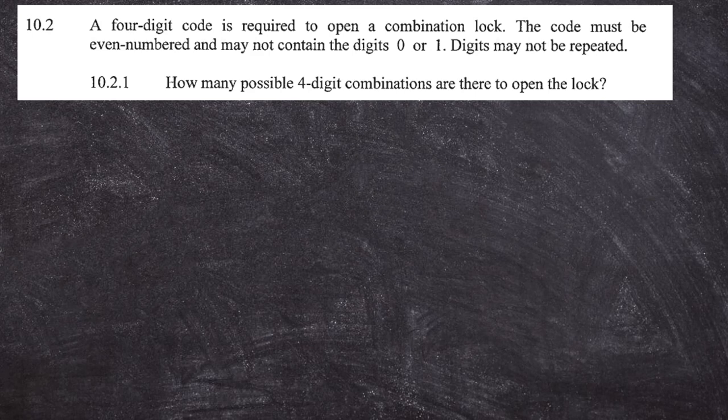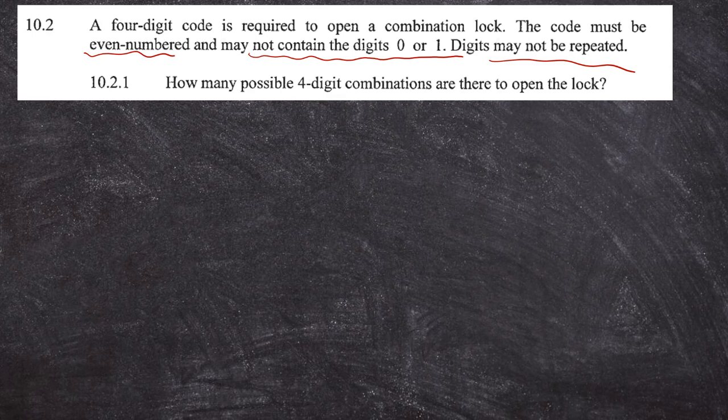We're going to start with 10.2.1. In question 10.2, a four-digit code is required to open a combination lock. The code must be even-numbered — very important restriction — and may not contain zero or one. The digits may not be repeated. So you are given three restrictions. The first question asks you to calculate the total number of possible four-digit combinations that can be formed to open this lock.